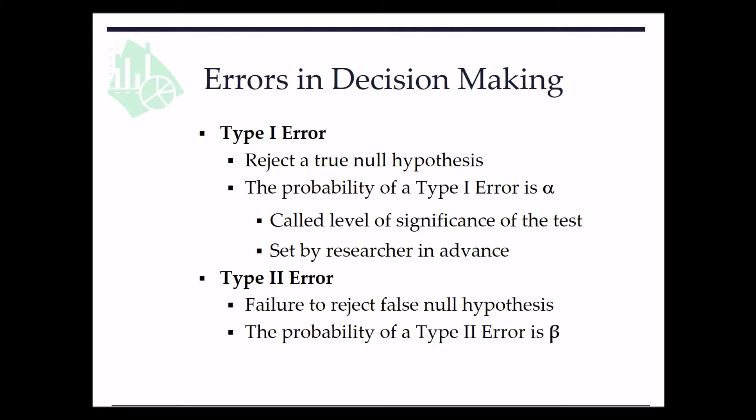The probability of a type 1 error in hypothesis test is alpha. This is called the level of significance of a test and is set by researcher in advance. So we typically use a small alpha value like 0.05 or 0.01.